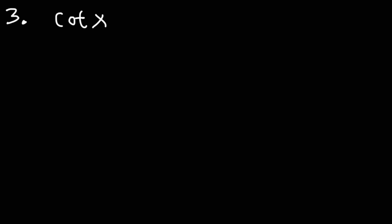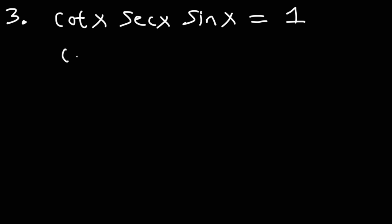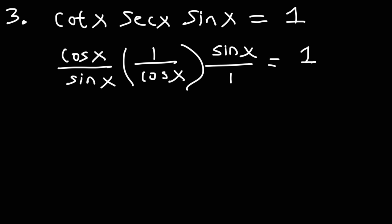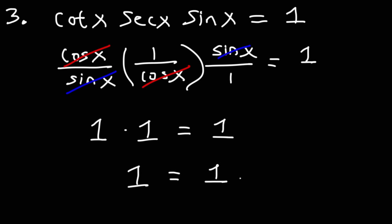Problem three: cotangent times secant x times sine x equals 1. Using step one, convert to sine and cosine: cotangent becomes cosine over sine, secant becomes 1 over cosine, and sine x stays as sine x over 1. Sine x over sine x cancels to 1, and cosine over cosine cancels to 1. So we get 1 times 1, which is 1. Identity verified.